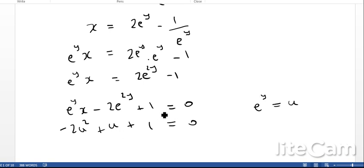Okay, and now I can use the quadratic formula. Sorry, there should be an x here as well. Next, I can use the quadratic formula where a is going to be minus 2. Now b, we're going to treat x just as the constant, as it were, in front of the u, and then the c is going to be 1. So we put these three values here into the quadratic formula.